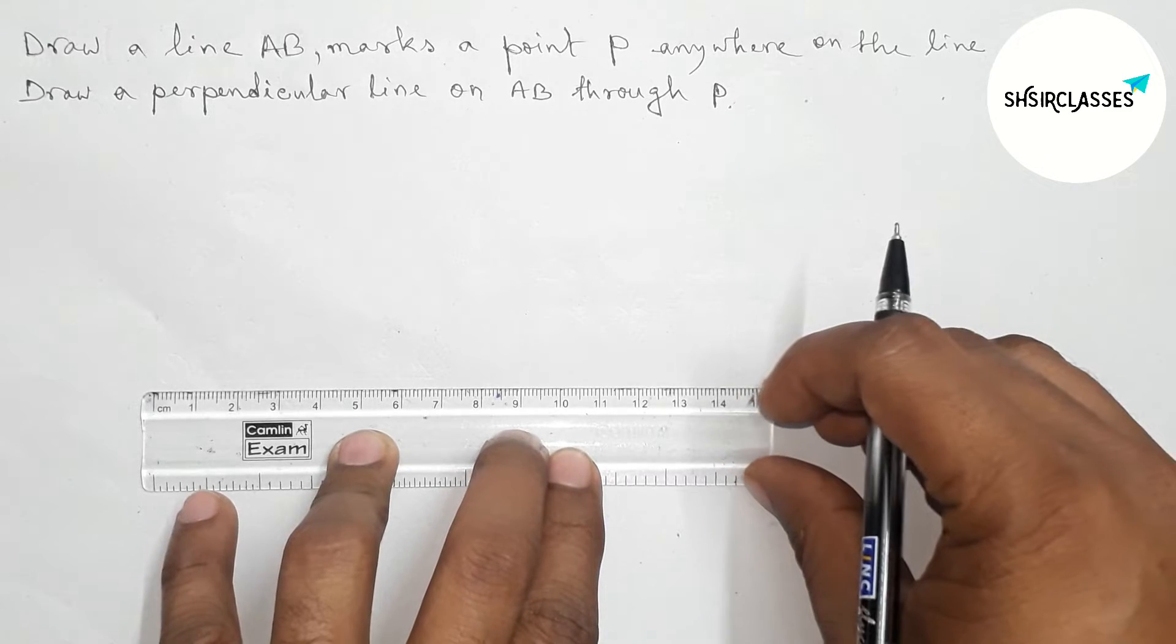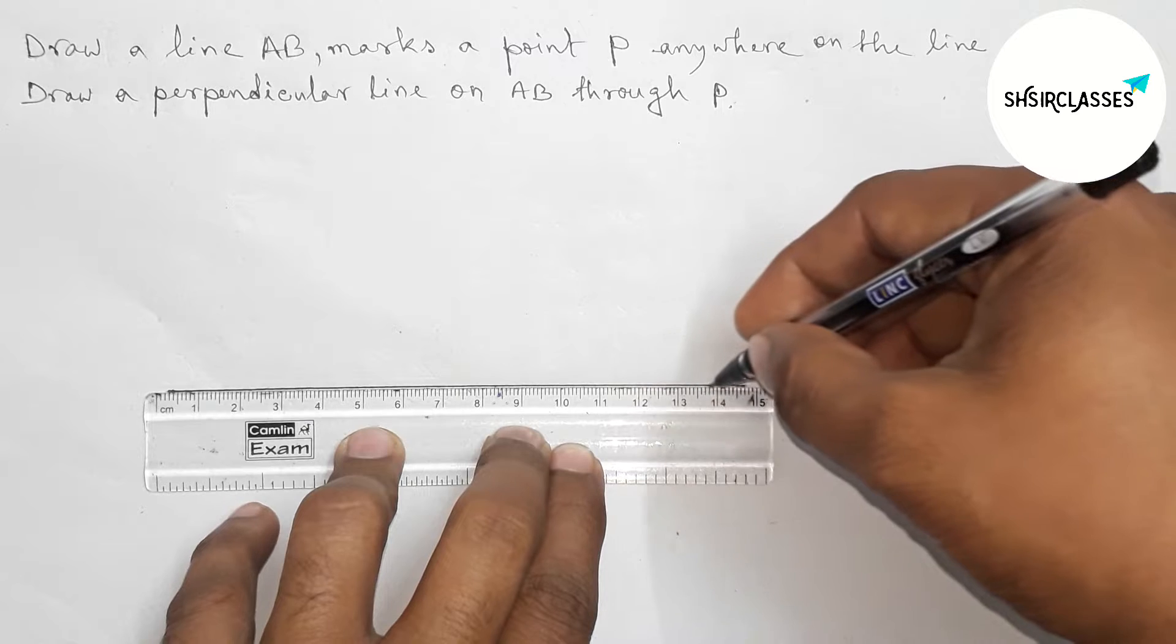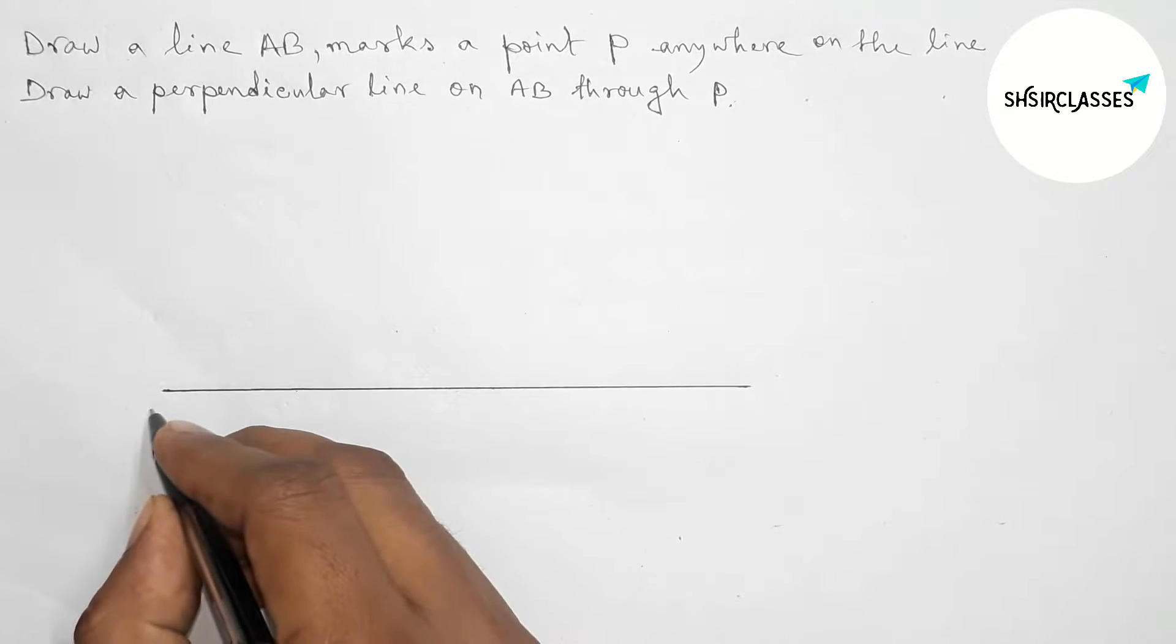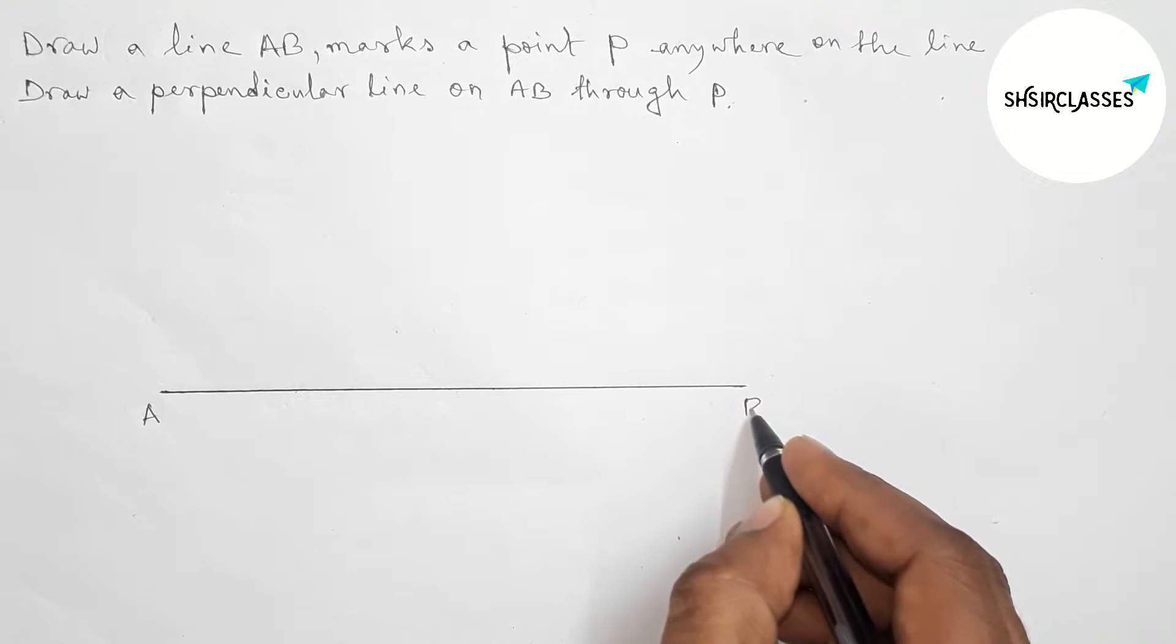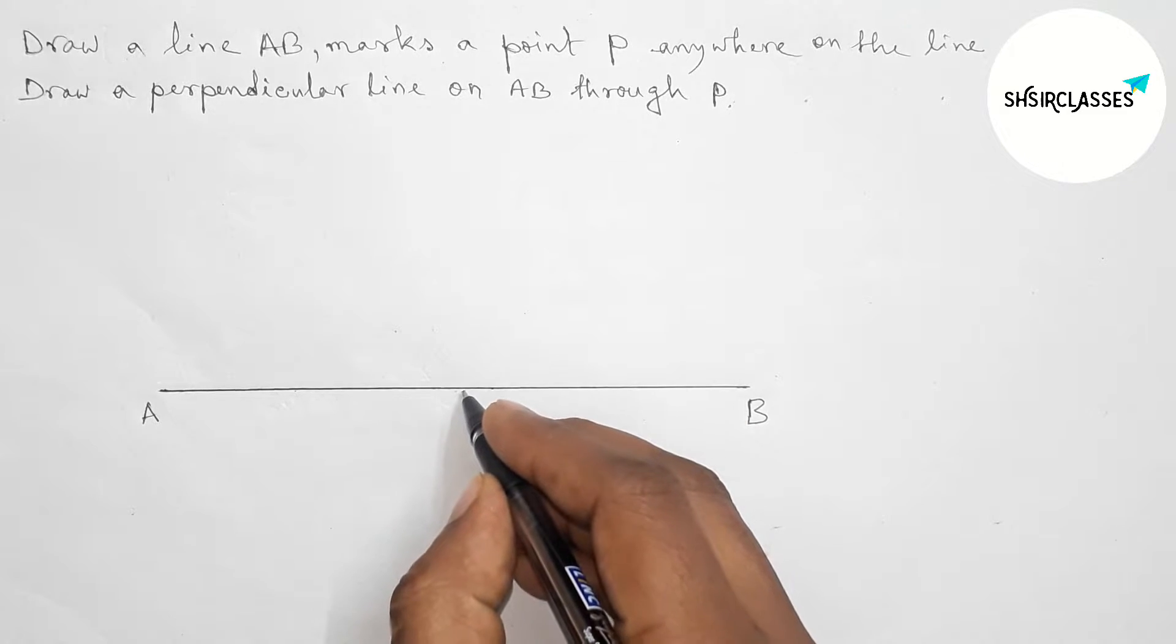Okay, now first of all, drawing here a line segment of any length. Taking point here A and here B. Next, taking a point P anywhere on the line AB.